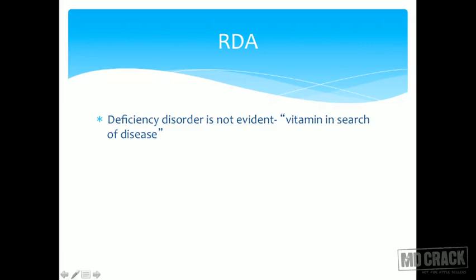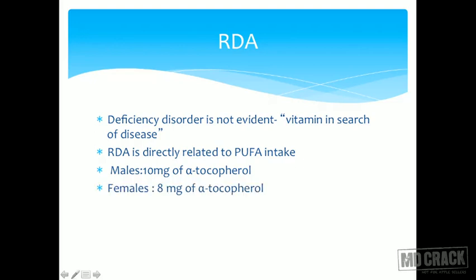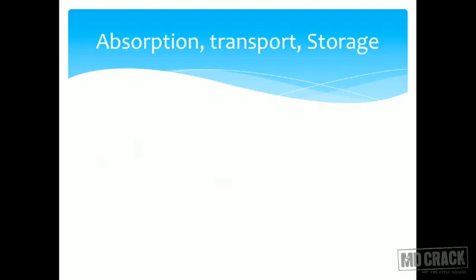What is the RDA? The deficiency disorder is not evident, so exact RDAs are not well established. It is said to be a vitamin in search of a disease. The RDA is directly related to PUFA intake — the more polyunsaturated fatty acids consumed, the greater the requirement. It is approximately 10 mg of alpha-tocopherol for males and 8 mg for females.